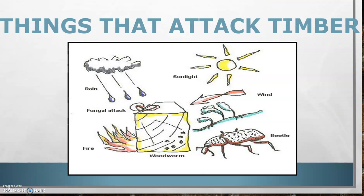As I said, some defects are natural. There are lots of things that can affect timber and attack it which are natural — that's where some of the defects come from. Some defects, like knots, just naturally occur in the timber. That's where the origin of the branch was.